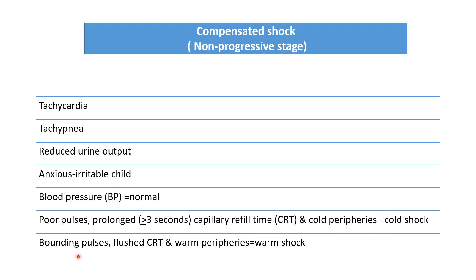If the patient has bounding pulse, flushed capillary refill time, and warm periphery, we label it as warm shock. Not all patients will have poor pulse, cool periphery, and CRT more than 3 seconds. In warm shock, the patient will have bounding pulse, warm periphery, and flushed CRT. But because of tachycardia, tachypnea, and an irritable child, we have to keep in mind it may be an early stage of septic shock in the form of warm shock.